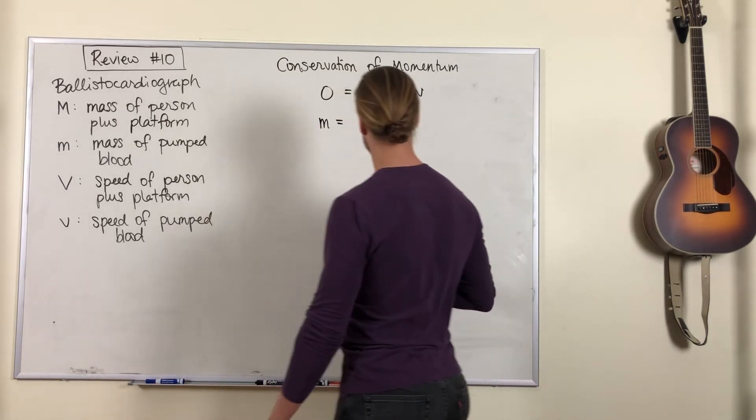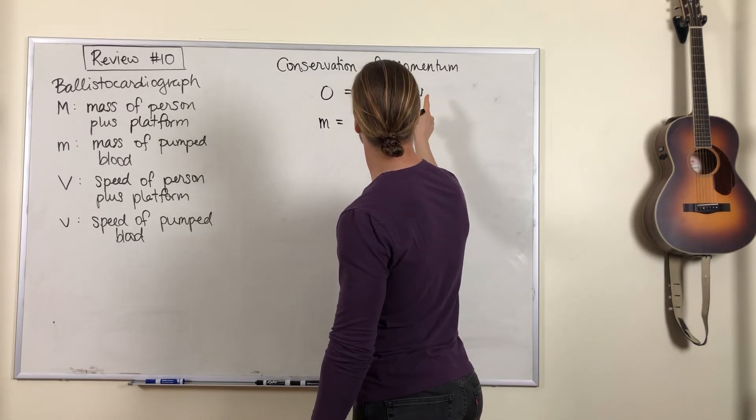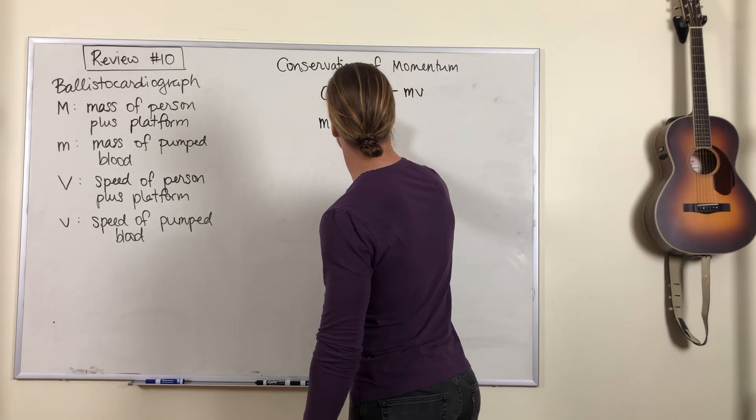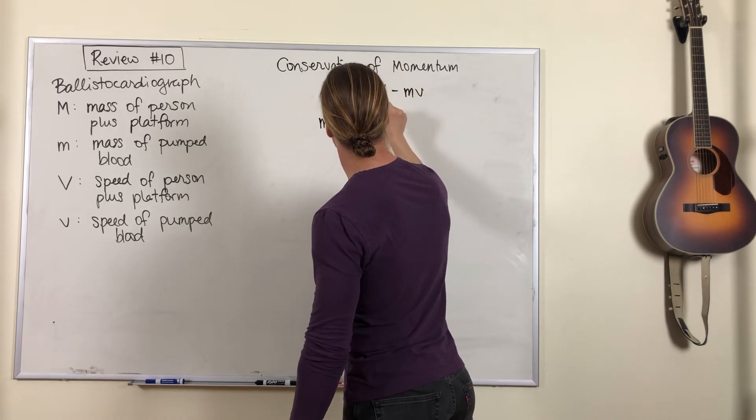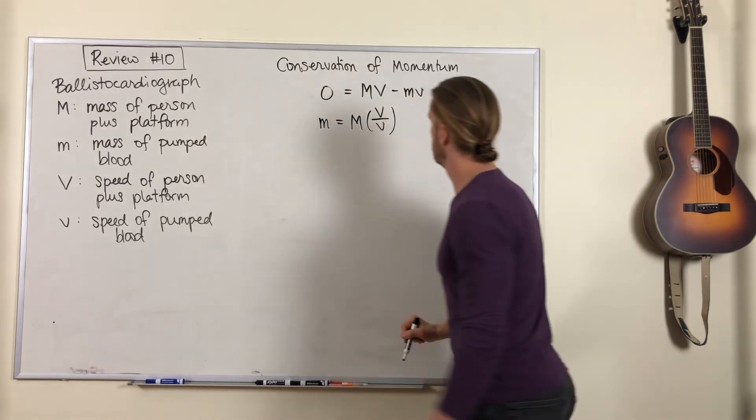The mass of that pumped blood will equal big M times big V over little v. So mathematically, this is pretty simple.